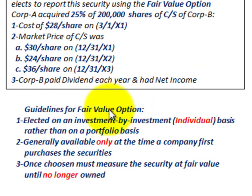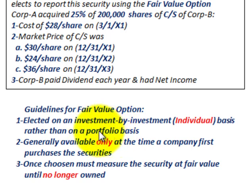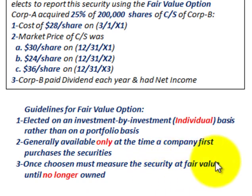The guidelines for the fair value option: it's elected on an investment-by-investment basis, so on an individual basis. Whatever securities you invest in, you elect them using this fair value option individually rather than on a portfolio basis — that might be done for equity or available-for-sale securities. Generally, it's available only at the time the company first purchases the securities, and once chosen, you must measure the security at its fair value until you no longer own it.